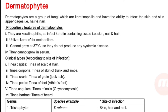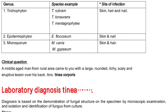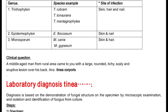Special species examples: Trichophyton, which infects skin, hair, and nail — including T. rubrum, T. tonsurans, T. mentagrophytes. Epidermophyton floccosum infects skin and nail. Microsporum — M. canis and M. gypseum — also infects skin and hair.